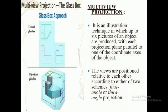Multi-view projection is an illustration technique in which up to six pictures of an object are produced, with each projection plane parallel to one of the coordinate axes of the object. As you can see in the diagram, it is also termed the glass box approach. The views are positioned relative to each other according to either first angle projection or third angle projection.